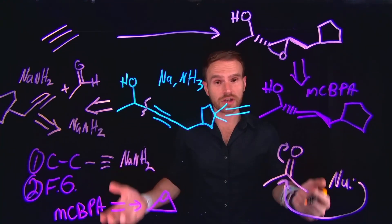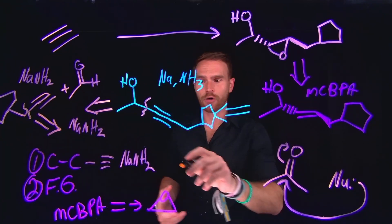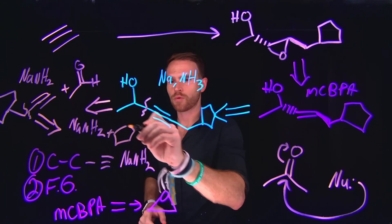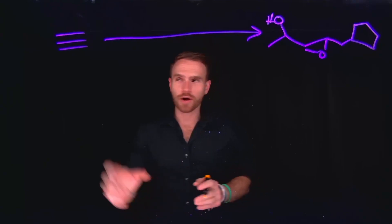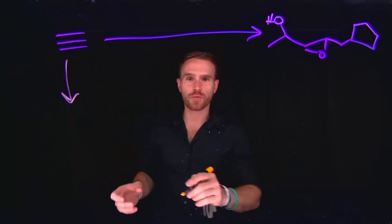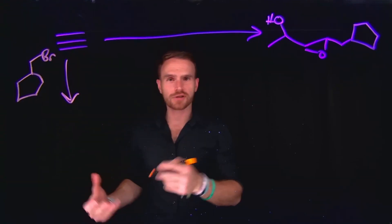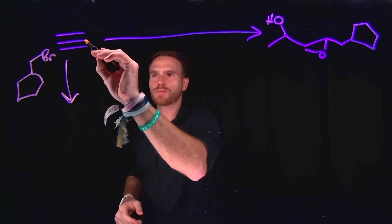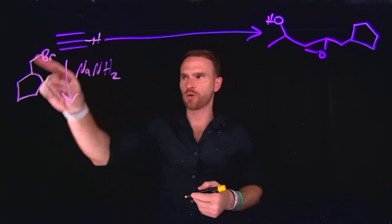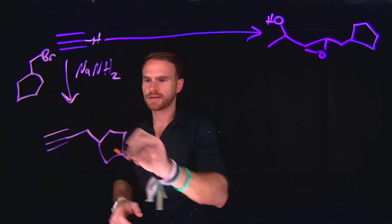The previous step must have also used NaNH2 in order to do that carbon-carbon bond formation where you deprotonate the alkyne and it acts as a nucleophile. Specifically, it can do substitution reactions of alkyl bromides, which means that the remaining component of my molecule must have been an alkyl bromide. Therefore, the other starting material besides this alkyne must have been that five-membered ring that contained an alkyl bromide. Now let's work our way from the reactants to the products in the forward direction.